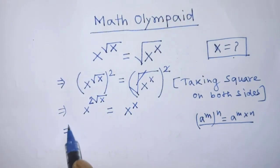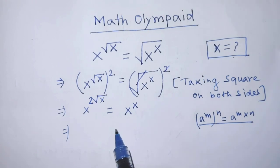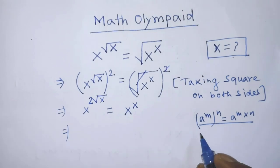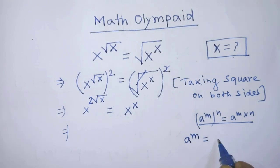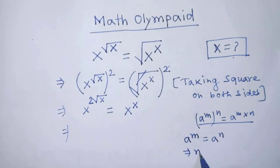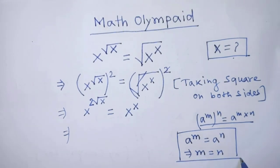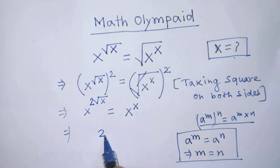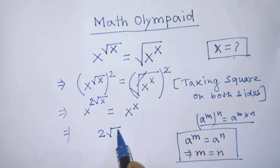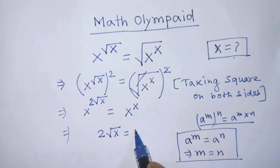In this equation, on both sides, in the place of base, both are same. Now we have to apply the formula. According to this formula, we can cancel the base x from both sides of this equation. Then we get 2 times square root of x is equal to x.